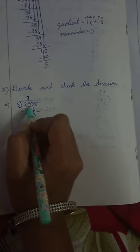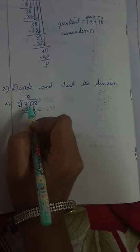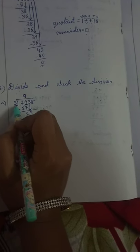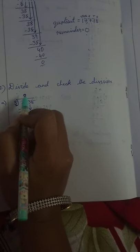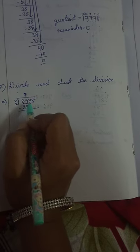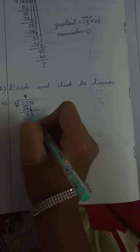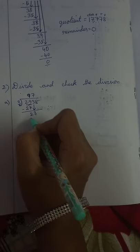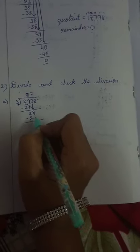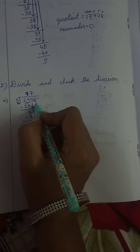So we take 2 digits, 29. In the 3 table, 3 nines are 27. 29 minus 27 is 2. Bring down the 3. After that, 3 sevens are 21. 23 minus 21 is 2.